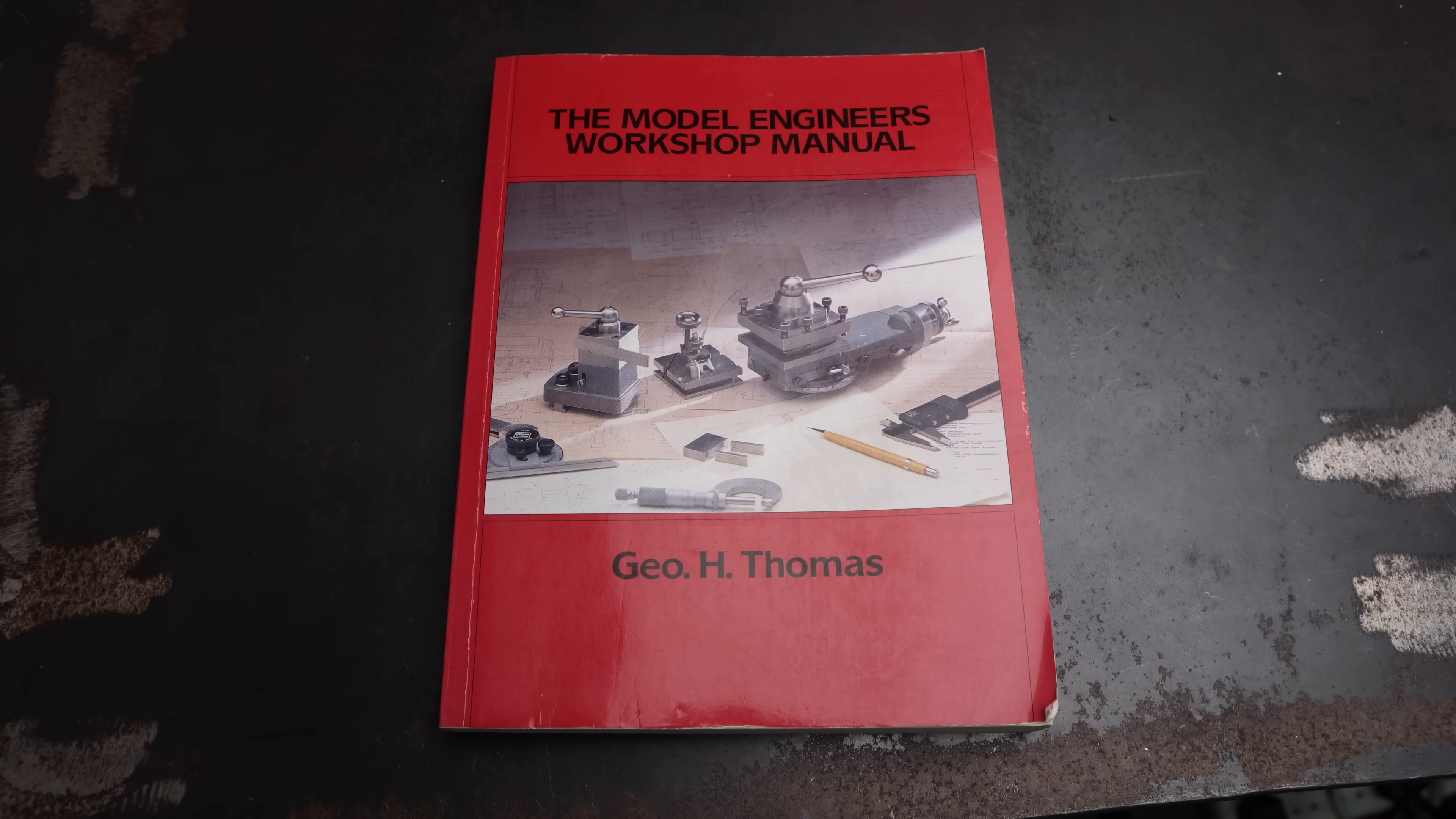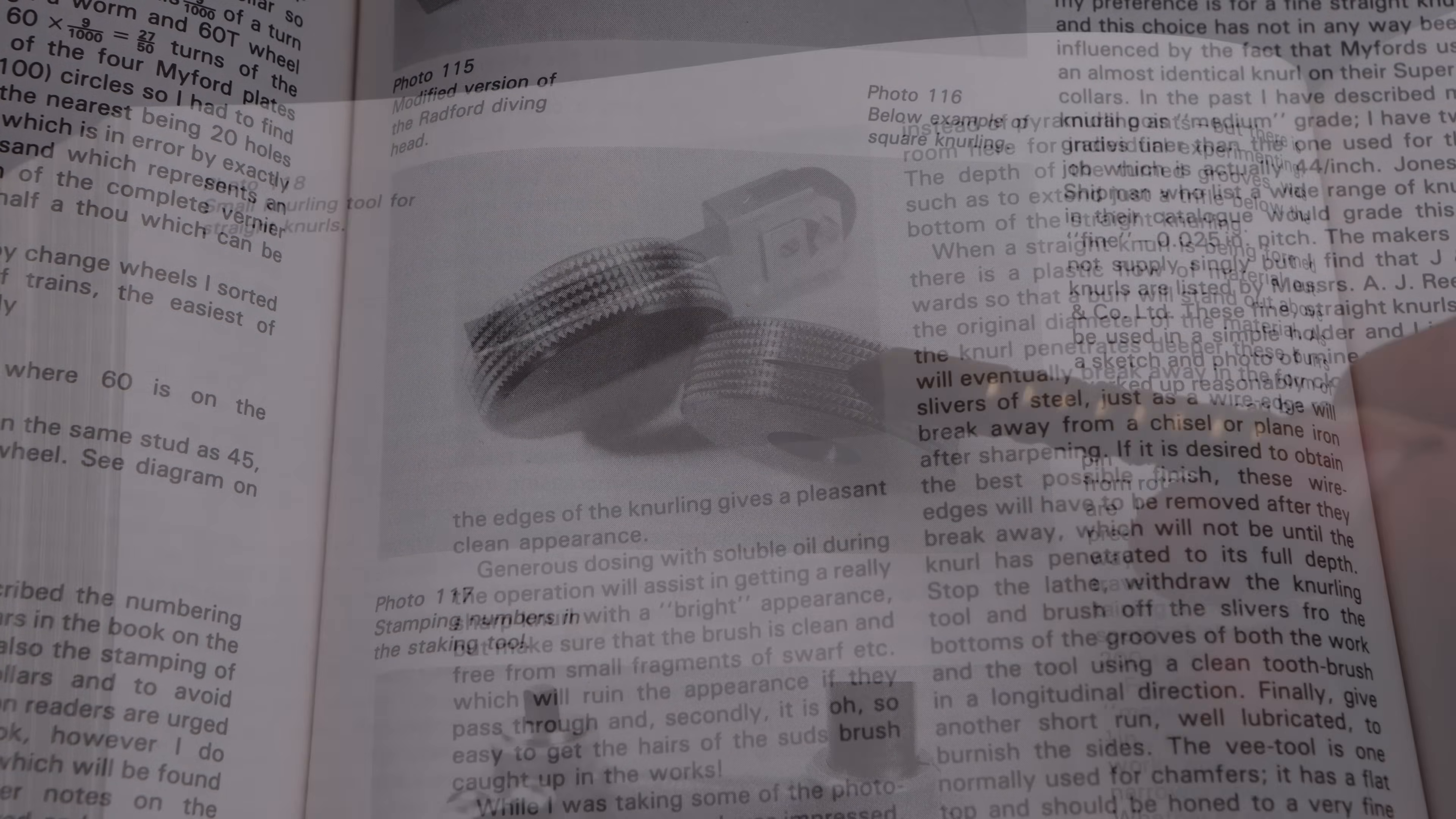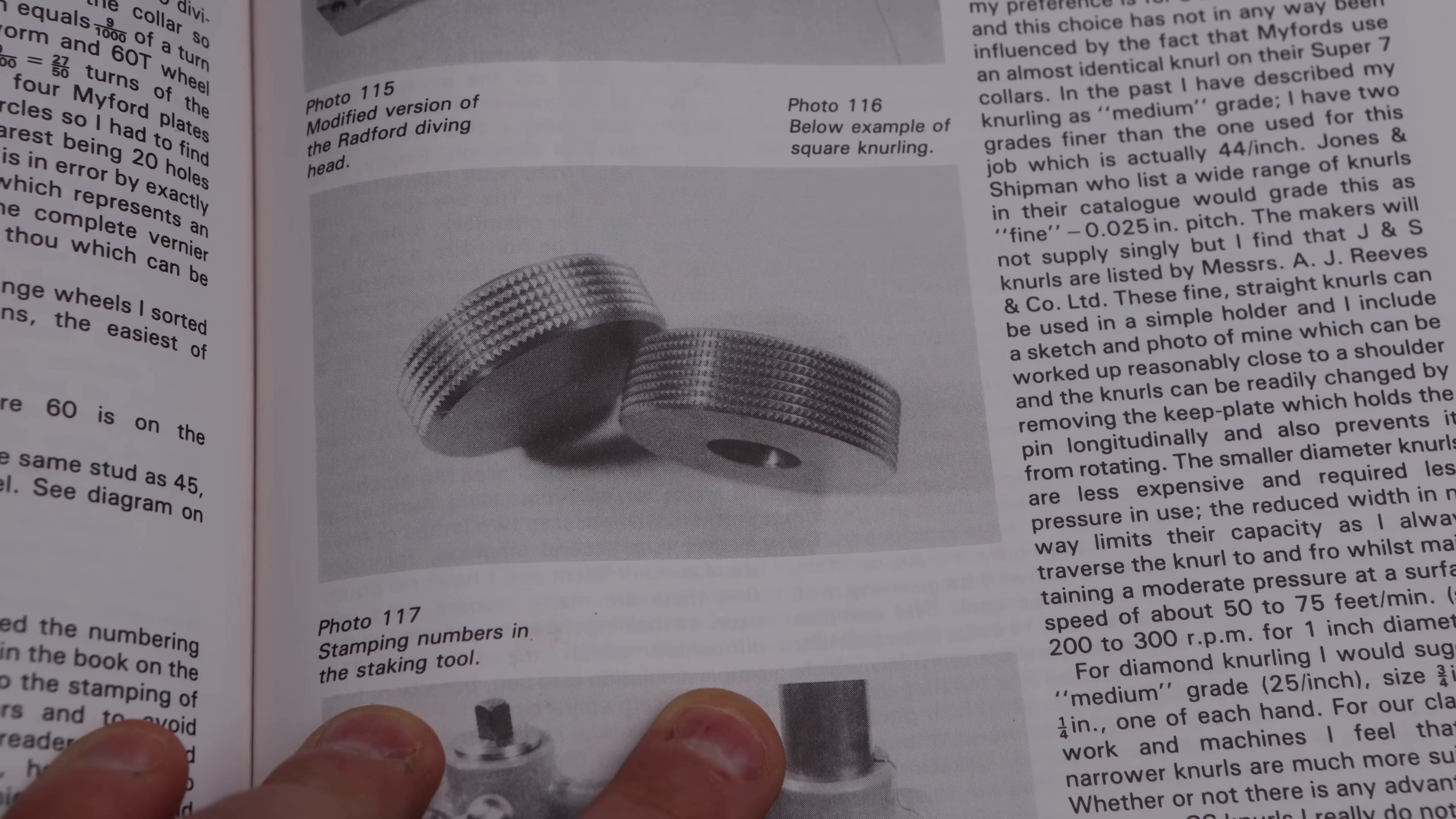And I was recently looking at this book by George H Thomas and this is a real classic for us model engineers here in the UK. And in it he describes square knurling and his process for creating those square knurls. And the way he does it is to first create a straight knurl with one of these push-in style knurlers and to come back in with a 90 degree chamfer tool and cut grooves in the opposite direction to the straight knurl. Now I'm going to take a slightly different approach to this for two reasons.